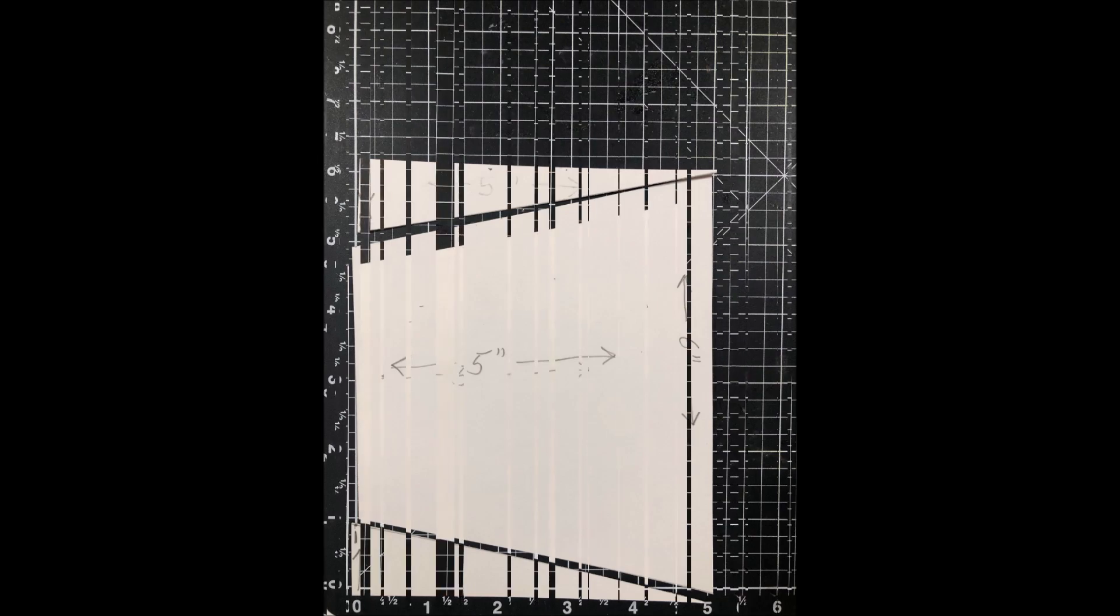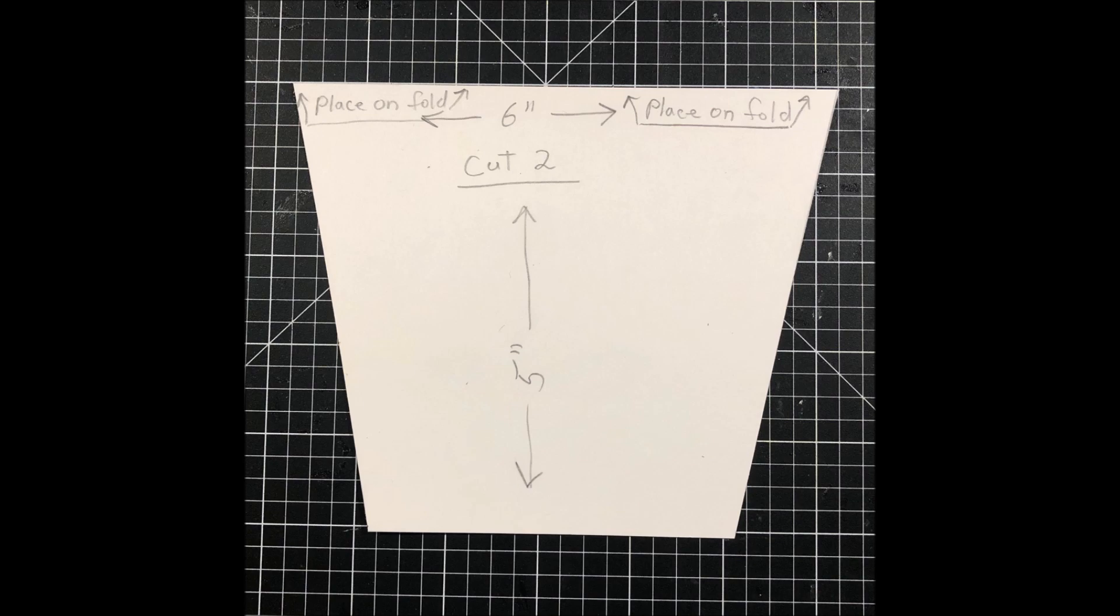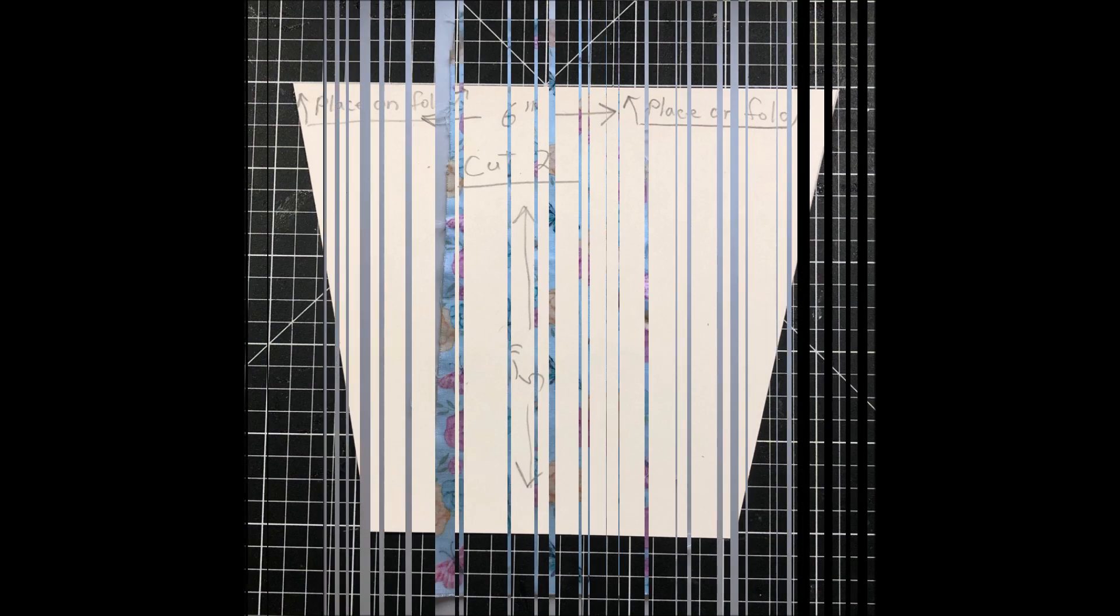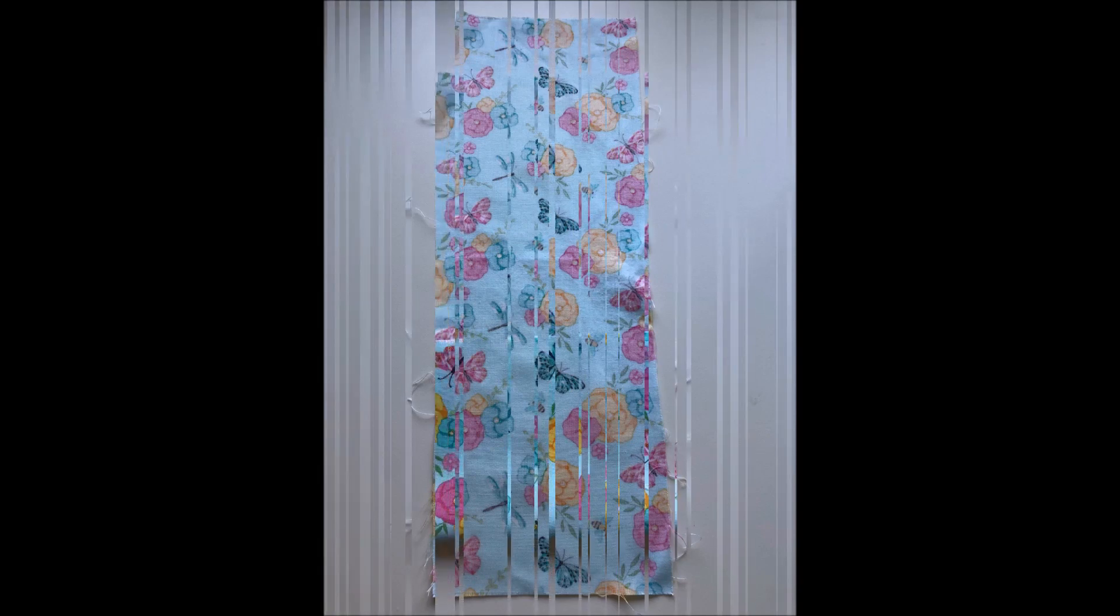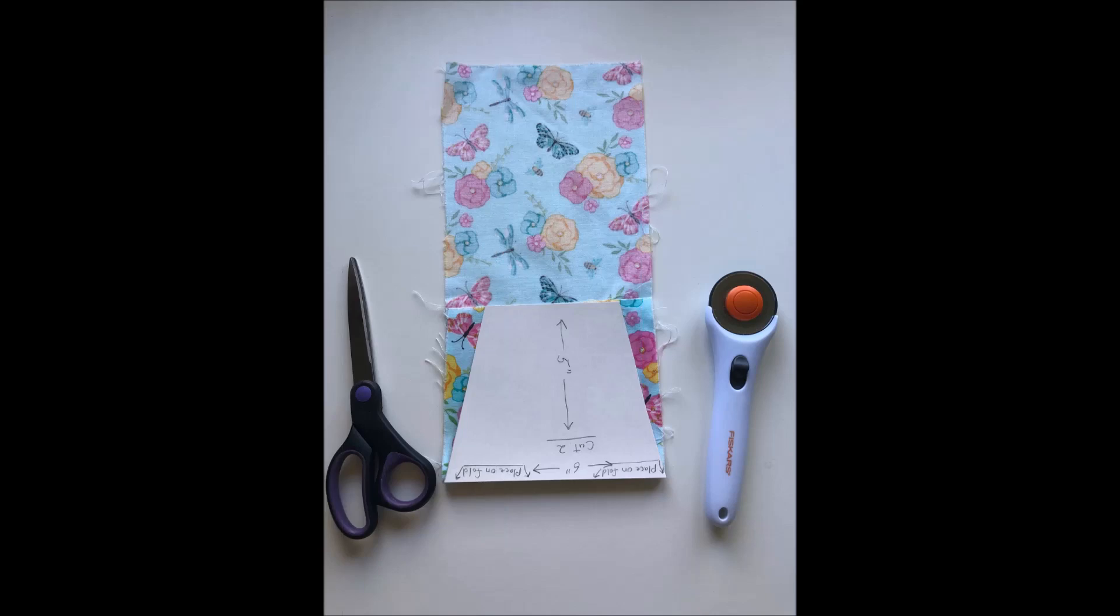Once you've done that, your pattern is going to look just like this. Now in this next picture you're going to see on the sixth inch side I wrote 'place on the fold,' so that means that you're going to fold your fabric and then place that edge on the fold before you cut it out.